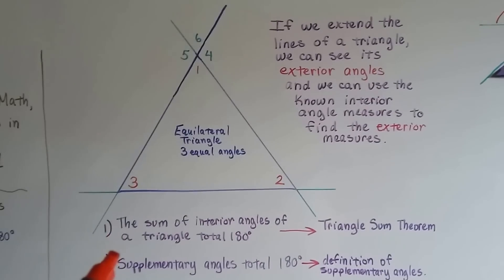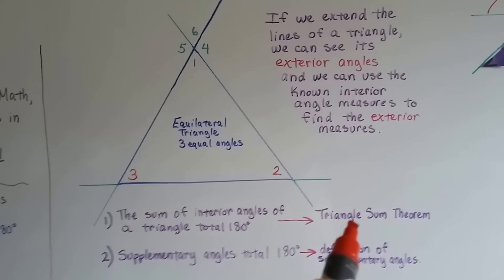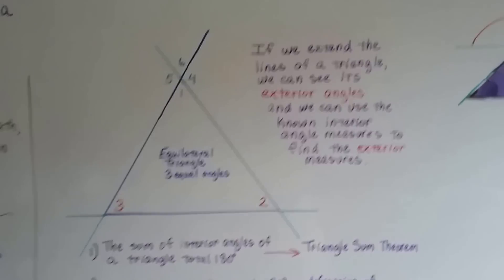The sum of interior angles of a triangle total 180 degrees. That's the triangle sum theorem, okay? Theorem? What's a theorem?